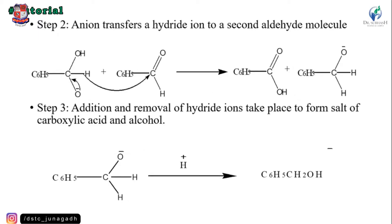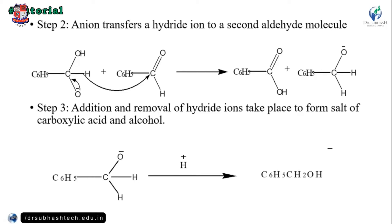In step two, the derivative of the carboxylic acid and one aldehyde molecule react. A hydride (H⁻) is transferred to the carbonyl carbon, forming a carboxylic acid salt and a derivative of the alcohol. The addition and removal of the hydride ion take place to form the salt of the carboxylic acid and alcohol. For example, C₆H₅CH₂O⁻ receives H⁺ to give benzyl alcohol — an aromatic primary alcohol.